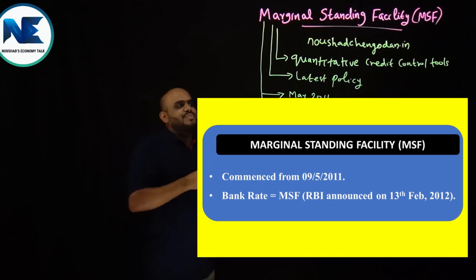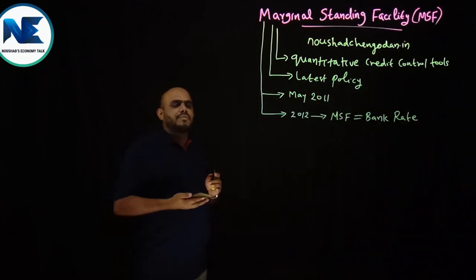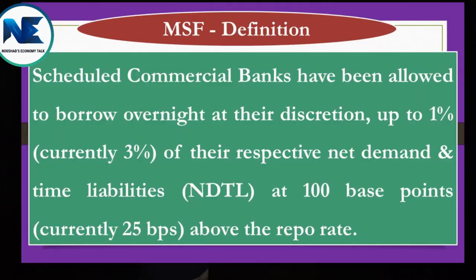Now we can discuss the clear-cut meaning of MSF. What do you mean by MSF? Why does RBI need MSF? The definition is: scheduled commercial banks have been allowed to borrow overnight at their discretion, up to 1% — currently 3% — of their respective Net Demand and Time Liabilities. That is the clear-cut definition of MSF.